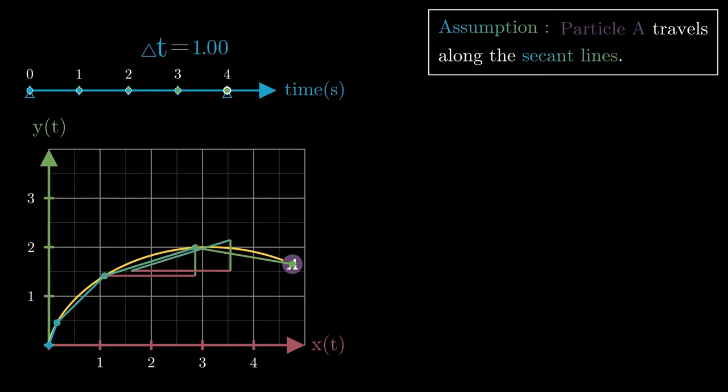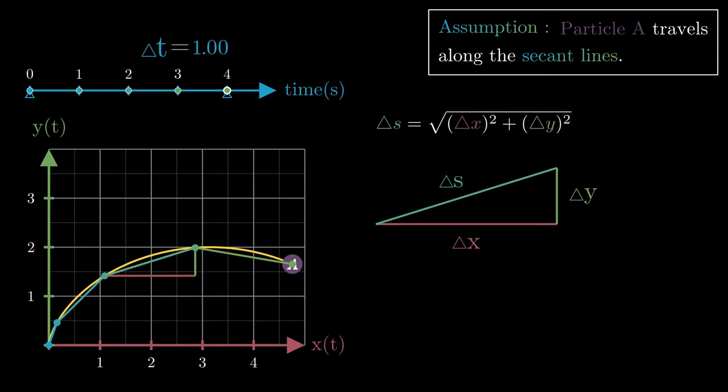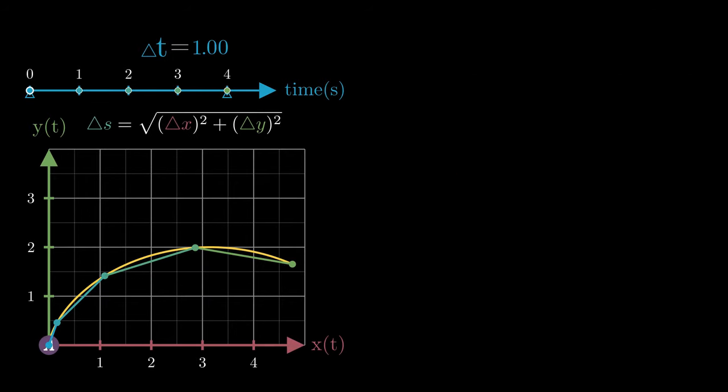Also, each of these little distances which we'll call delta s has got two components, delta x and delta y. Applying the Pythagoras theorem, delta s is the square root of the sum of squares of these individual components.